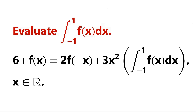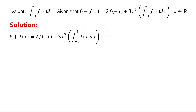Evaluate the definite integral of f of x with respect to x from negative 1 to 1. Given that 6 plus f of x equals 2 times f of negative x plus 3x squared times the integral. The identity holds for all x in the real numbers. We are interested in the integral between negative 1 and 1 of f of x.